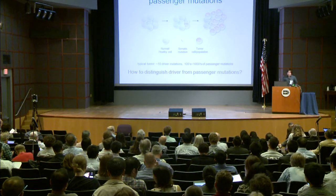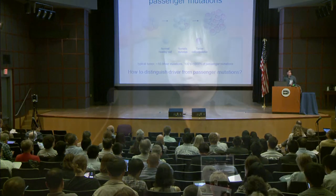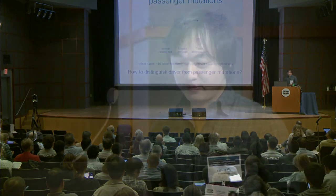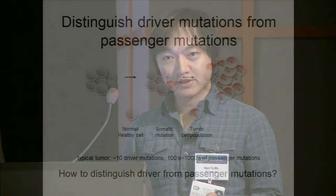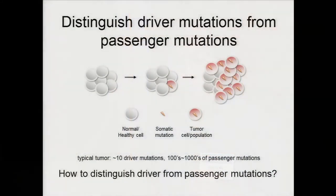We know the key challenge in cancer sequencing projects is how do you distinguish the driver mutation, which are responsible for cancer, from the passenger mutation, which are just randomly distributed on the cancer and do not contribute to cancer. This is a particularly difficult problem because in the typical tumor, the number of passenger mutations is way larger than the driver mutations.